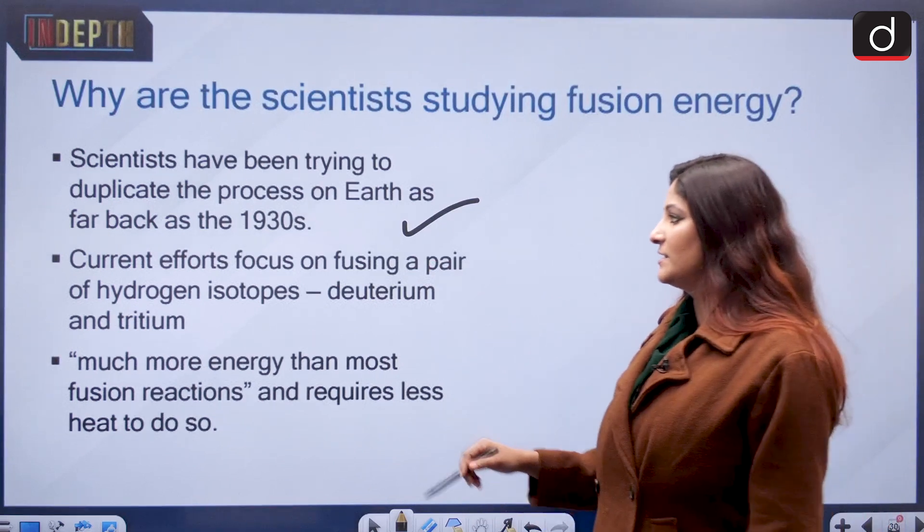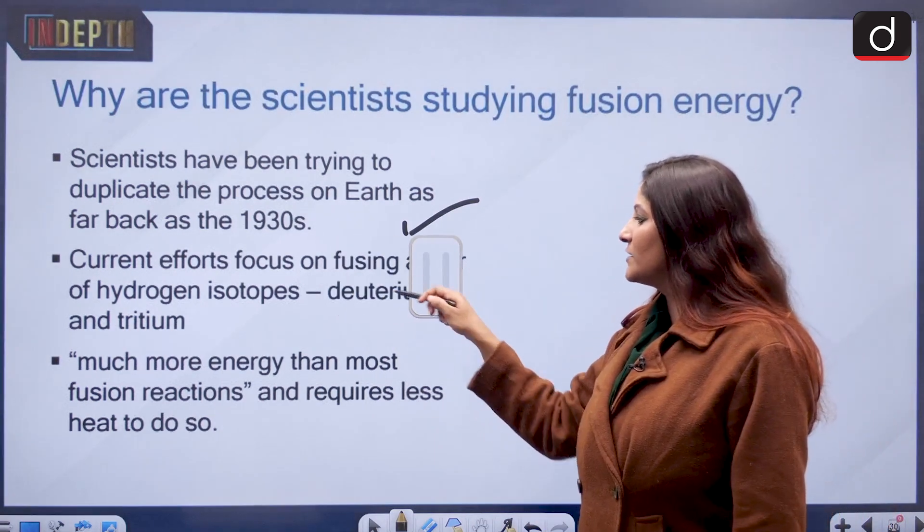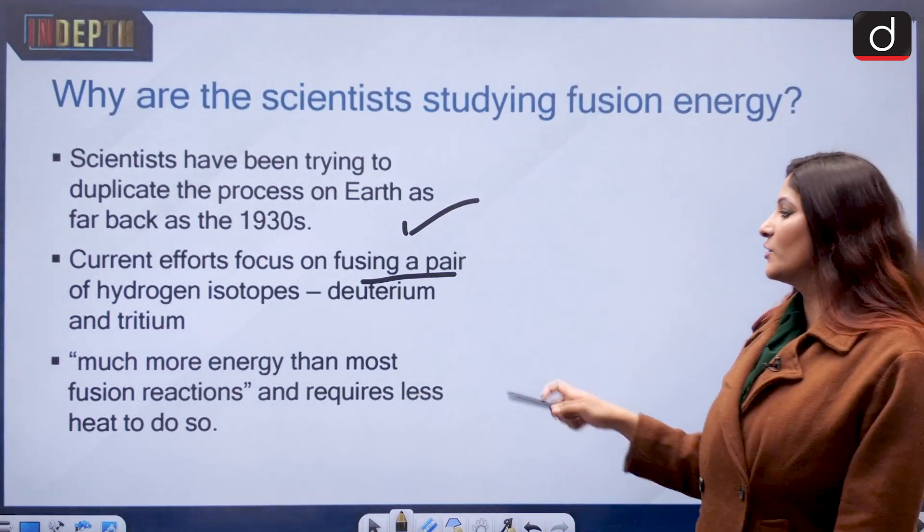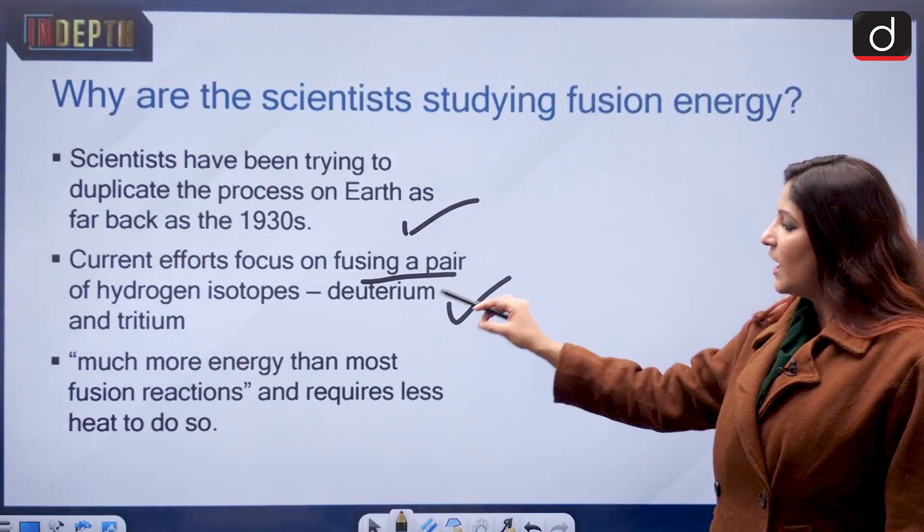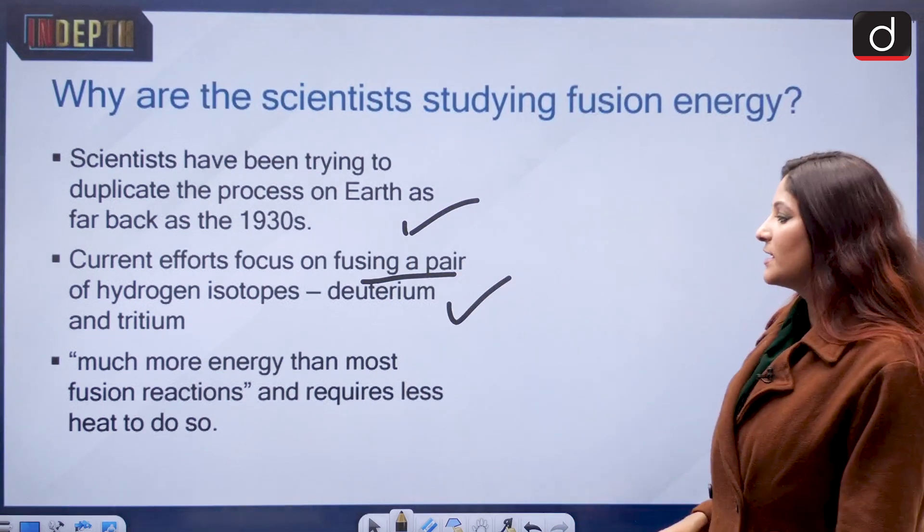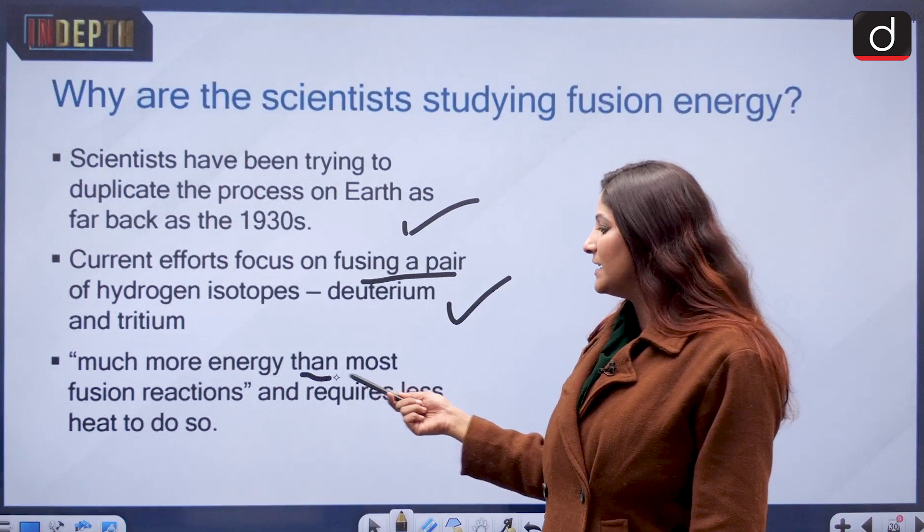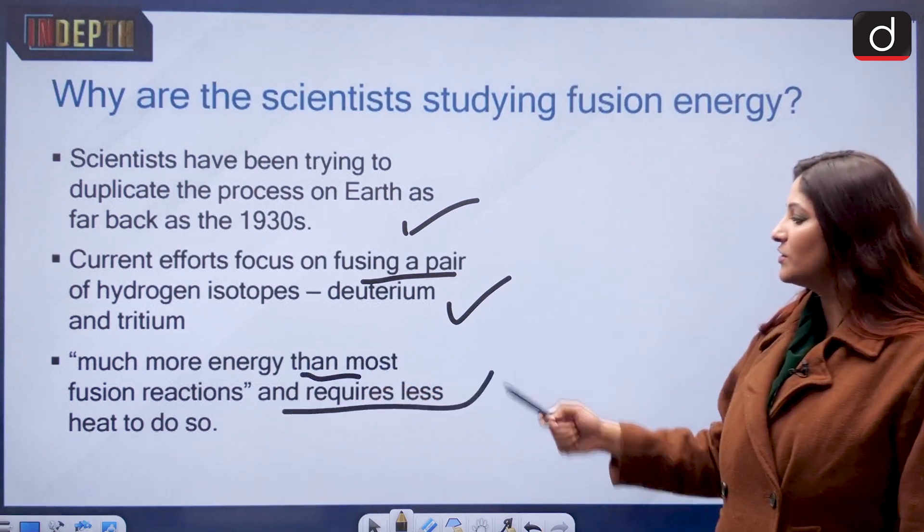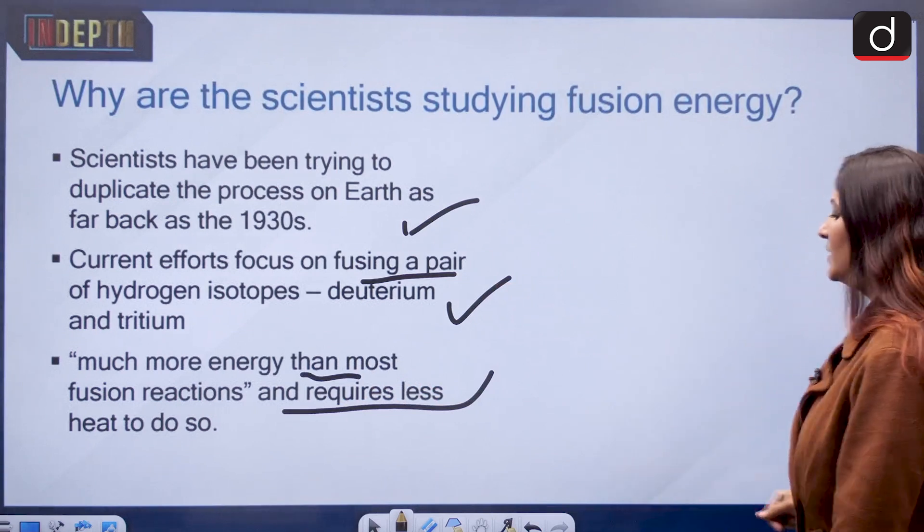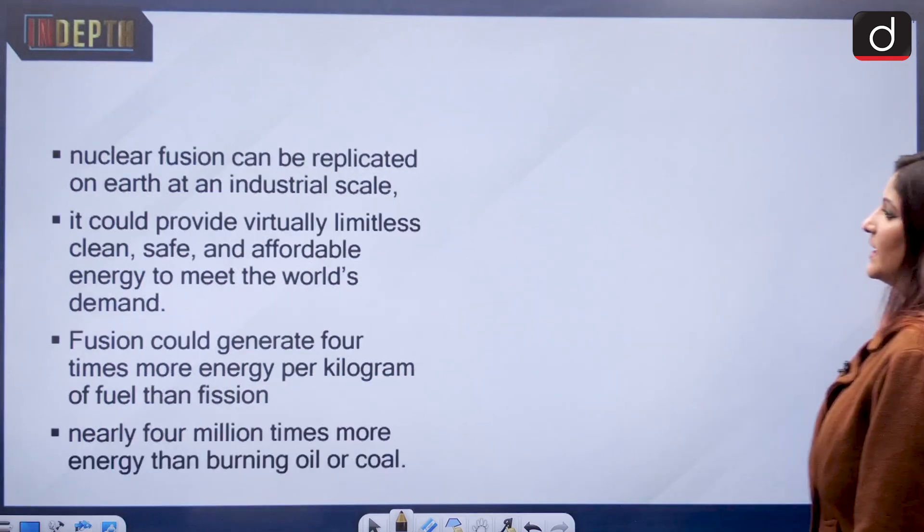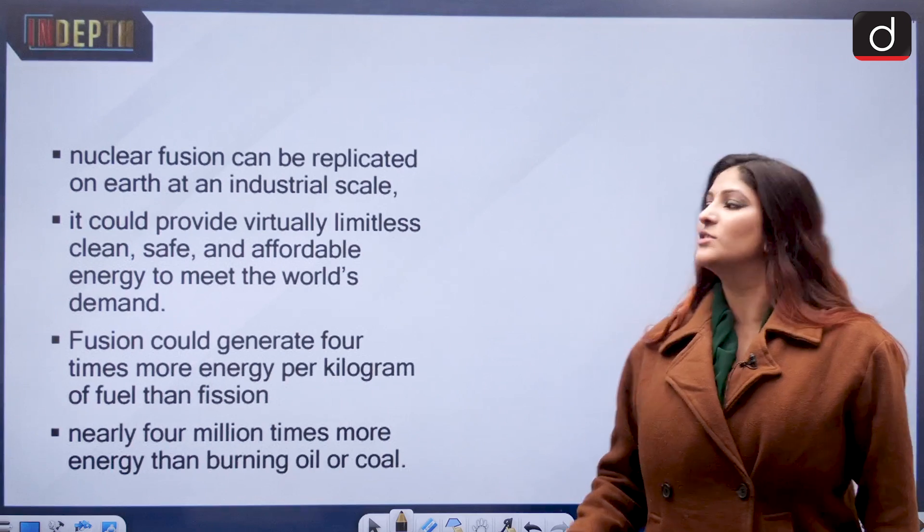They have understood the process since the late 1930s. The current efforts focus on fusing a pair of hydrogen isotopes: deuterium and tritium. They are being used because much more energy is released than most of the fission reactions. Nuclear fusion can be replicated on earth at an industrial scale.